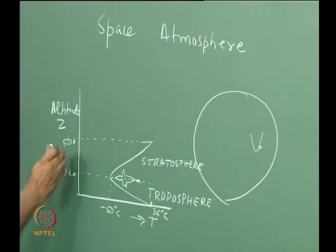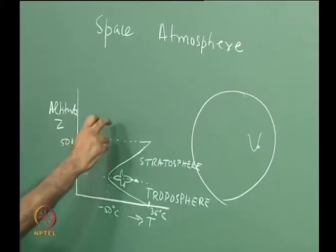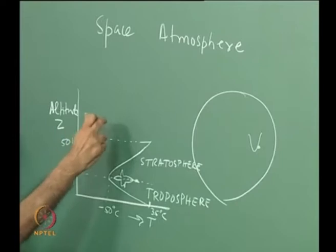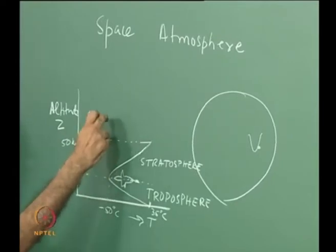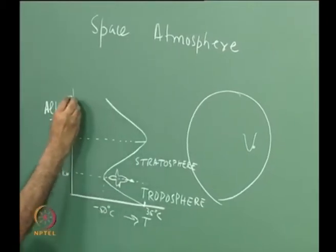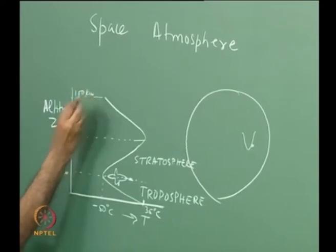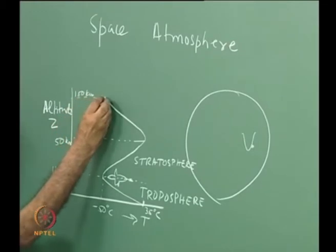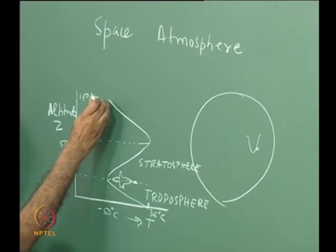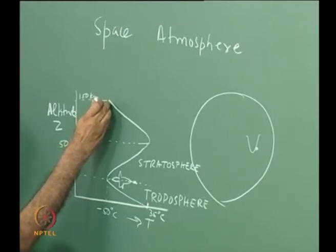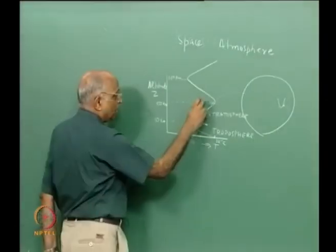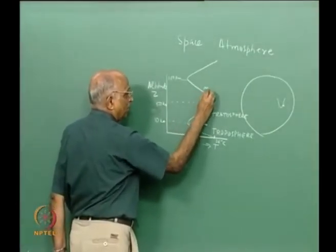If we go up still further, temperature increases because of ozone absorbing solar radiation. This increase manifests for about another 40-50 km, and the region of increased temperature is the stratosphere. At altitudes beyond 50 km the pressure and molecular density of air is so small that molecules cannot absorb radiation. Temperature drops again down to about 100 km altitude. This region where temperature drops again is the mesosphere.